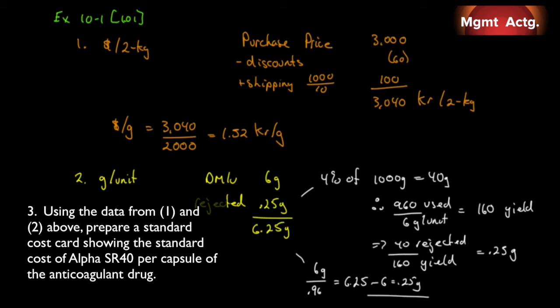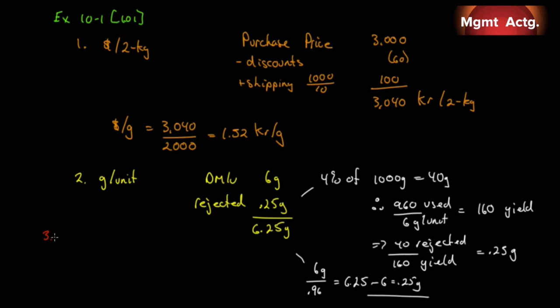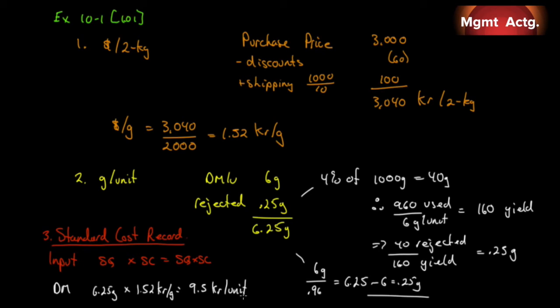Number three, using the data from one and two above, prepare a standard cost card showing the standard cost of alpha SR40 per capsule of the anticoagulant drug. So we'll squeeze it over here. We're going to fill out a standard cost record. So we have our input standard quantity times standard quantity times standard cost equals standard quantity times standard cost. So our input, we only have one input in this case, and that's direct materials. We have a standard quantity of 6.25 grams times our standard cost, which is 1.52 kroner per gram, which will give us 9.5 kroner per unit. There we go. That is 10.1.